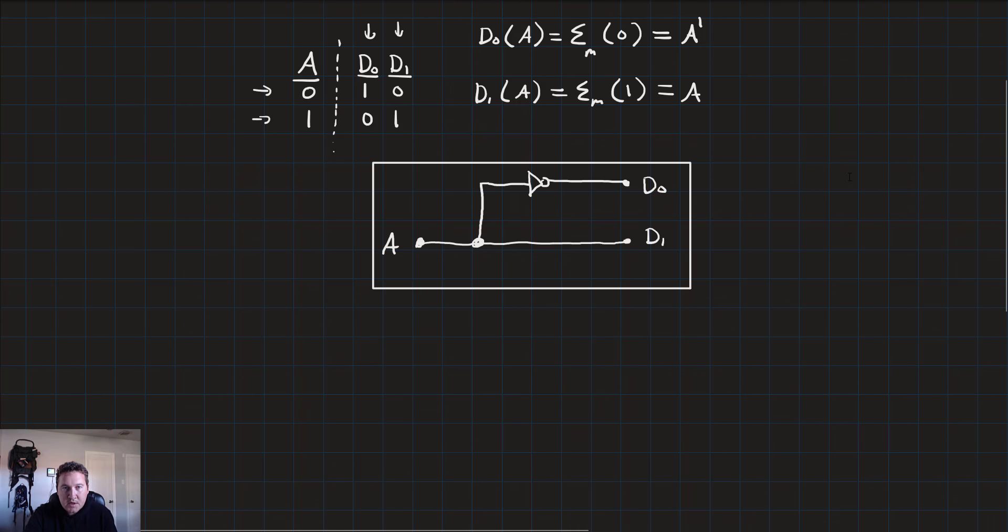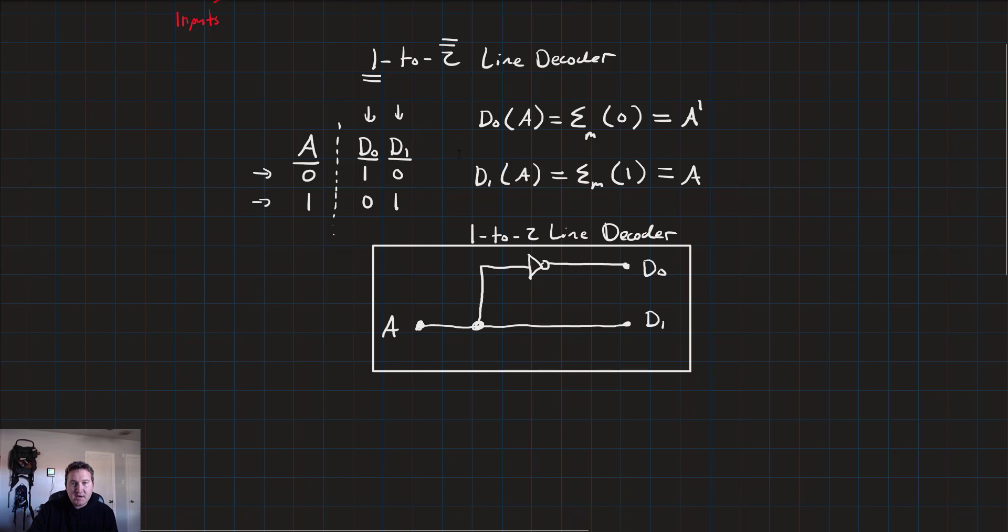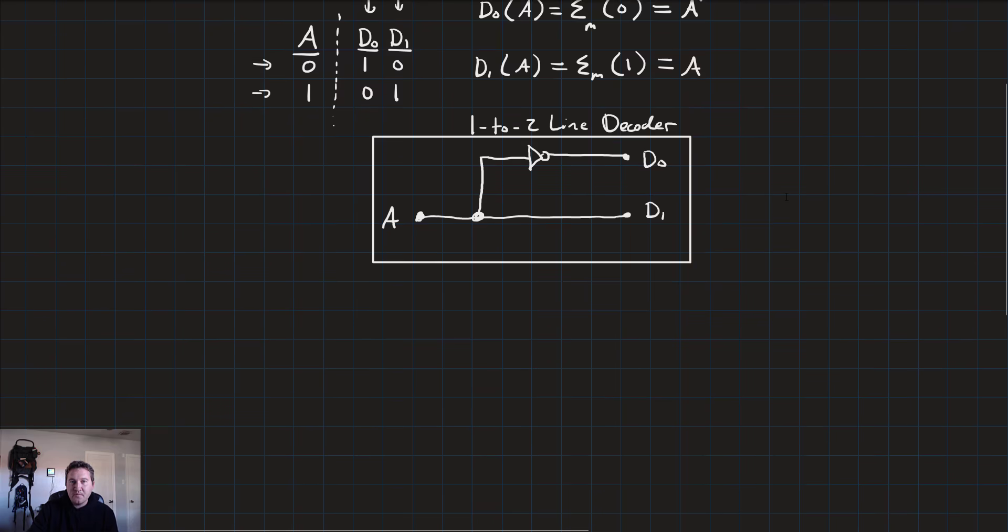So that's our 1 to 2 line decoder. And once we have this, it actually turns out we can build any other line decoder without using the same sort of combinational logic design process. We have to follow a procedure. The procedure looks like this. It's step one.